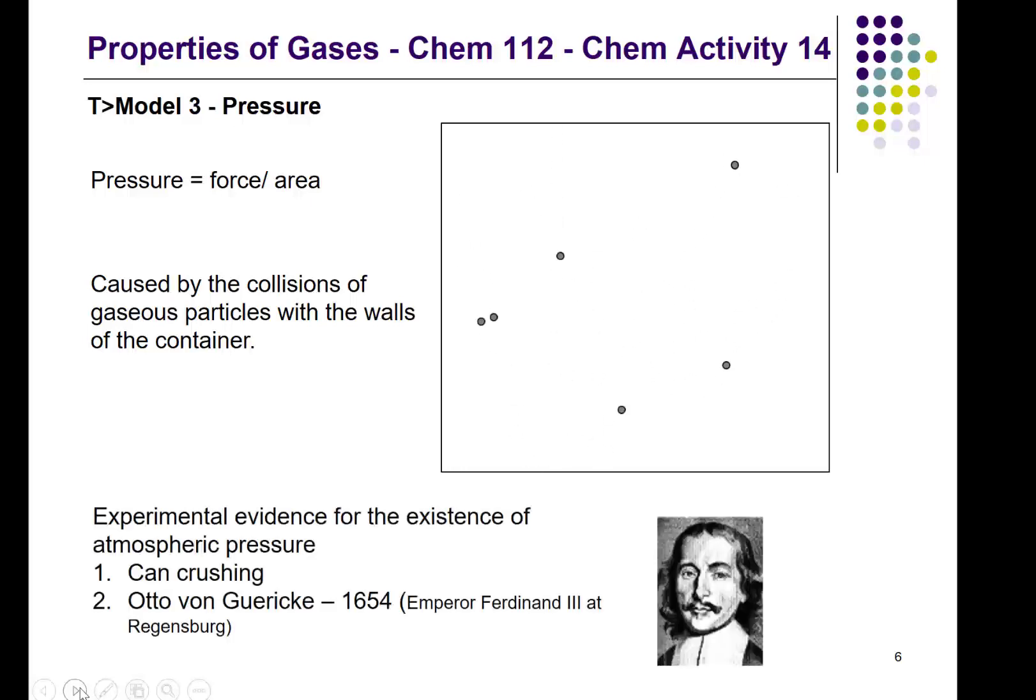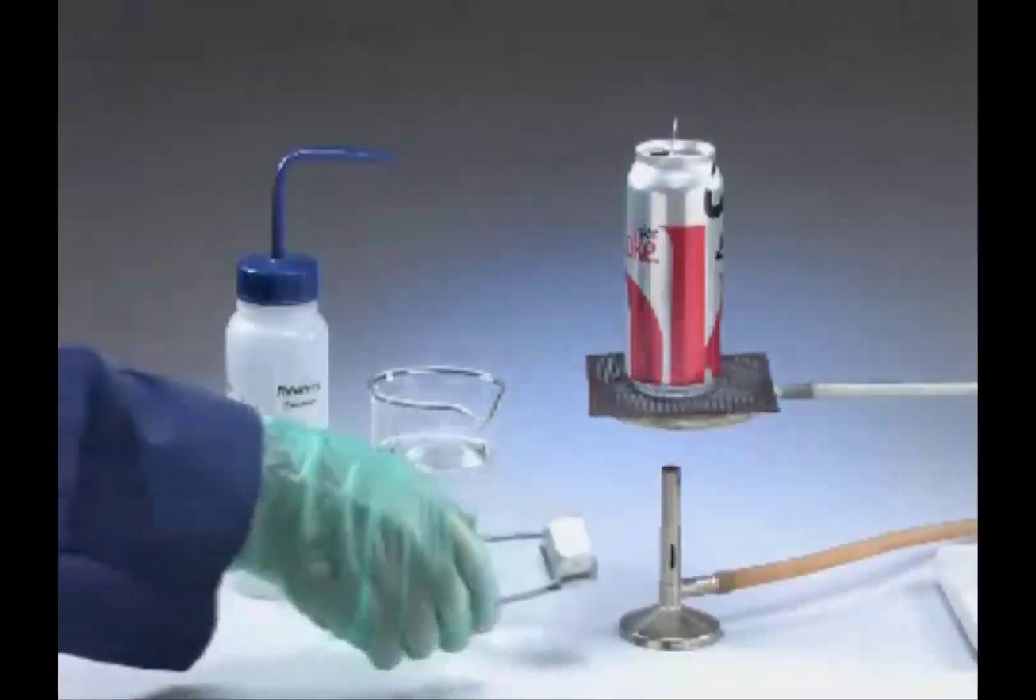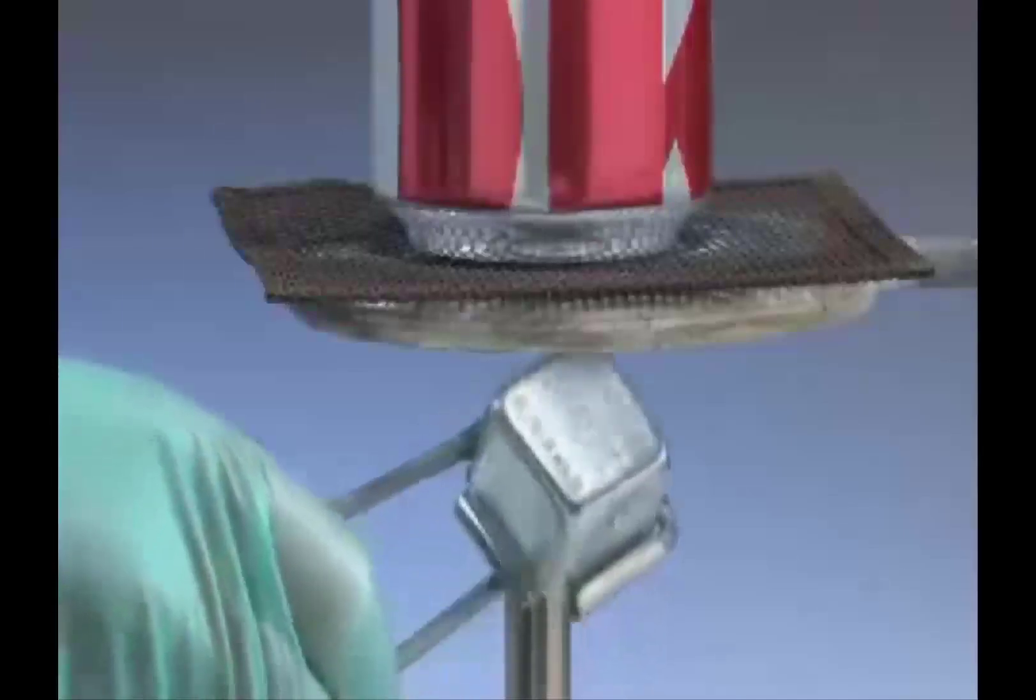Some of the experiments involved a can crushing experiment and then an experiment that was demonstrated by Otto von Guericke who was the mayor of Magdeburg in what is now Germany. I will present these as evidence that pressure is due to the collision of gaseous particles on the walls of the container and that this is a considerable force.